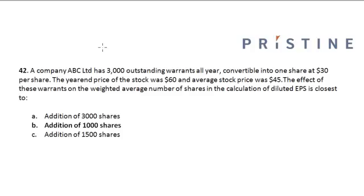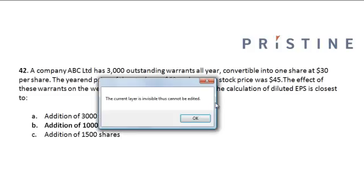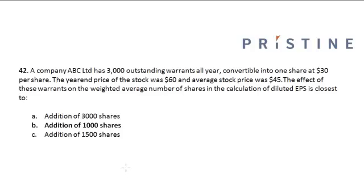Company ABC Limited has 3,000 outstanding warrants, all convertible into one share at $30 per share. The year-end price of the stock was $60 and the average stock price was $45. The effect of these warrants on the weighted average number of shares in the calculation of diluted EPS is closest to what?